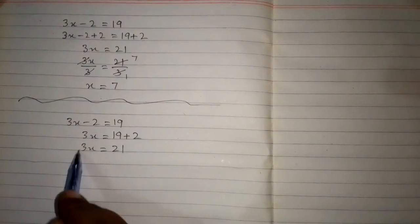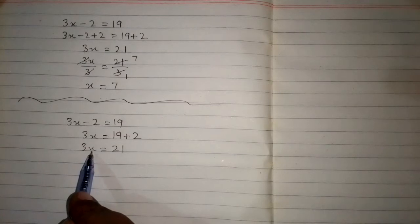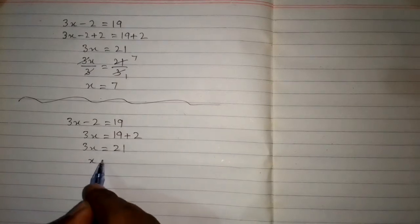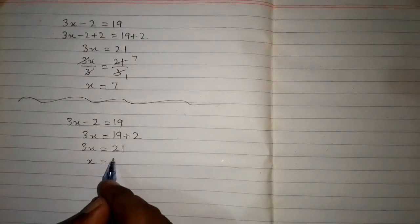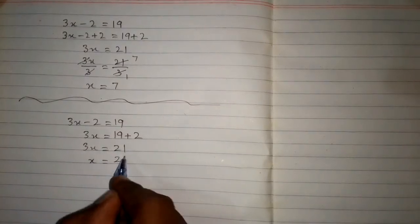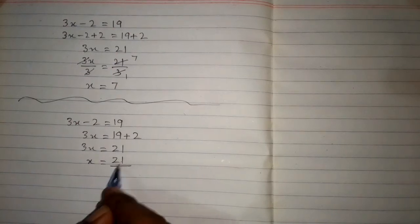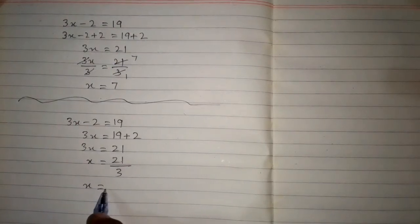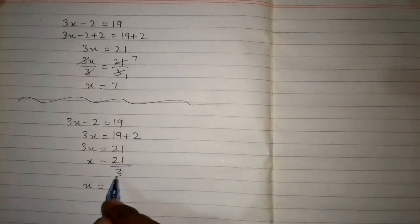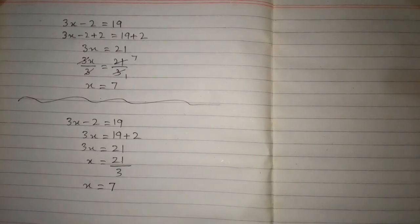Since this 3 is multiplied by x, if we take this 3 on the other side of the equation, it will divide 21. So we have x is equal to 21 upon 3, which is equal to 7. We have the same solution.